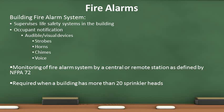Supervision is defined as the continuous monitoring of a fire alarm system by central station or remote station. The two most common types of supervision are two dedicated phone lines and internet service. Supervision is required when a building has 20 or more sprinkler heads. Supervision is not required for a single-family residence.